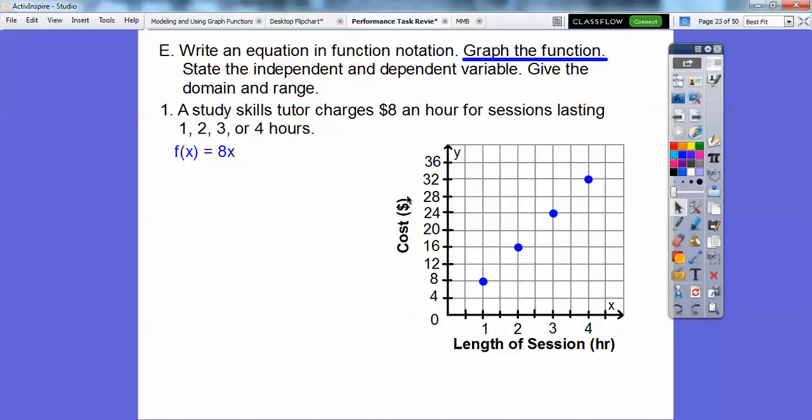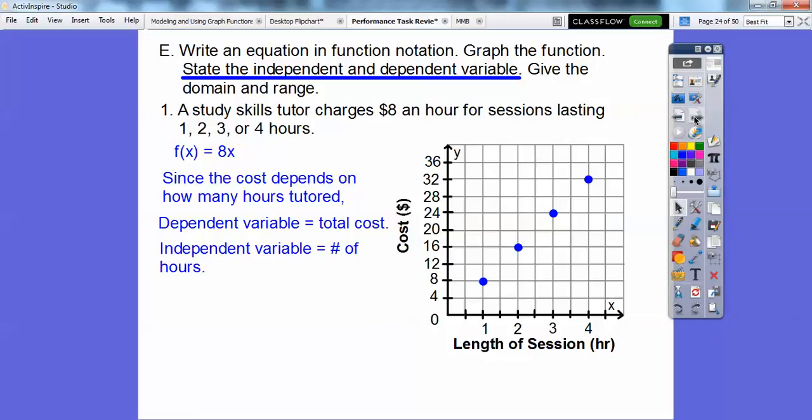Okay, typically this is the dependent variable. The cost totally depends on how long the session was being tutored right there. So since the cost was depending on, it's the dependent variable. So the dependent variable is your total cost and your independent variable is your number of hours. This is always your independent variable down here, almost always. And this is almost always your dependent right there.